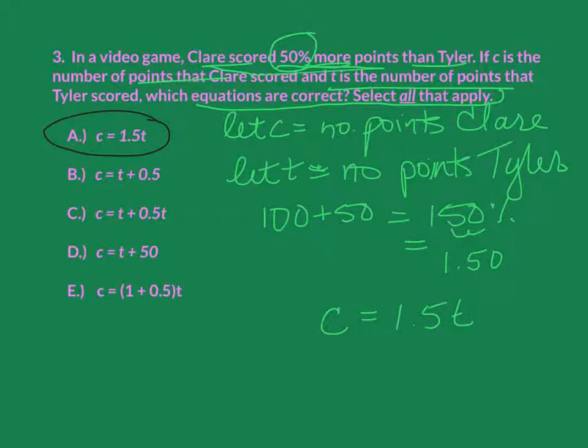C equals T plus 5 tenths. Well, hopefully you've gotten to the point where you know that that right there is a trick, because that 5 tenths, we need to do something with that other than just add it to the original. So that is wrong. C equals T plus 0.5T. So remember when I have just that variable, that's like saying 1T plus 0.5T. Well, if I were to break down my 1.5, I'd break it down into 1T and 0.5T. So it looks like C works. D is simply adding 50. The only way that would work is if Tyler had 100 points, and he's not going to have 100 points at any time. So that isn't going to work.